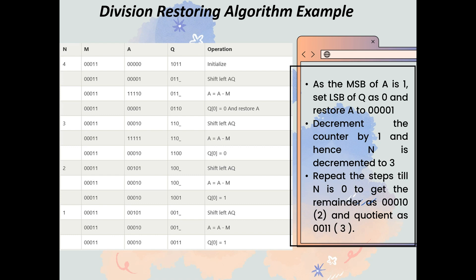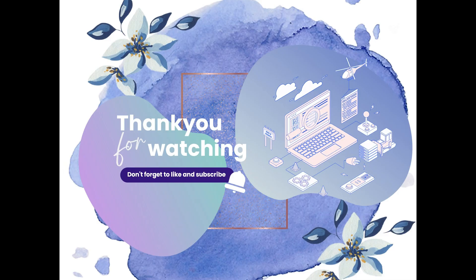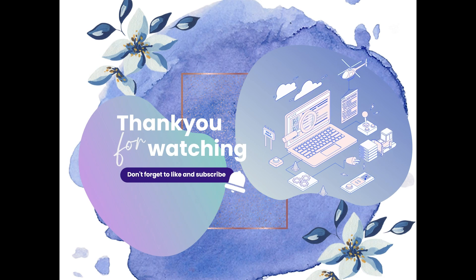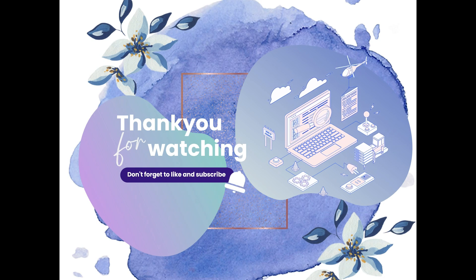Decrement the counter by 1, so n becomes 3. Repeat the steps until n equals 0. Finally, at the end we get the remainder as 0010 (that is 2 in decimal) and the quotient as 0011 (that is 3 in decimal). That was all about the Division Restoring Algorithm. If you have any doubts, feel free to drop them in the comment section below and we'll try our best to clear them. Thank you very much.